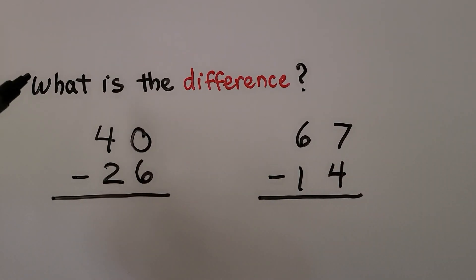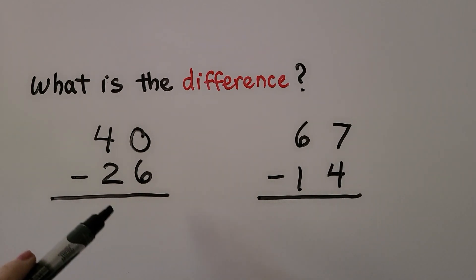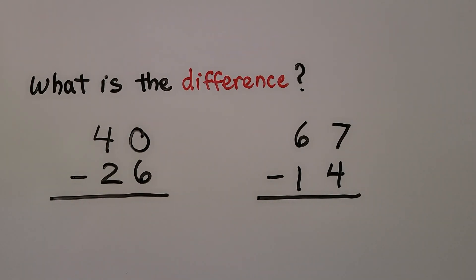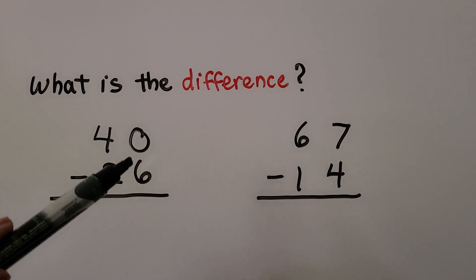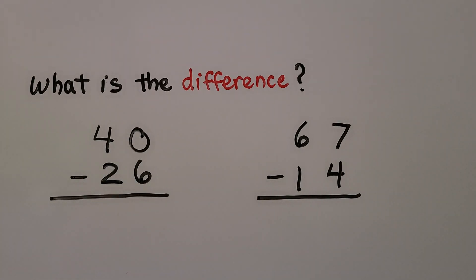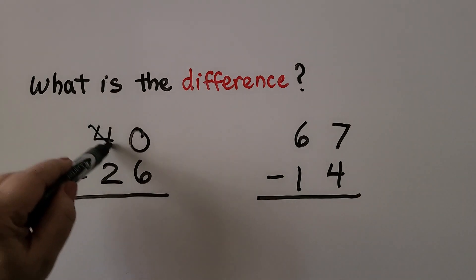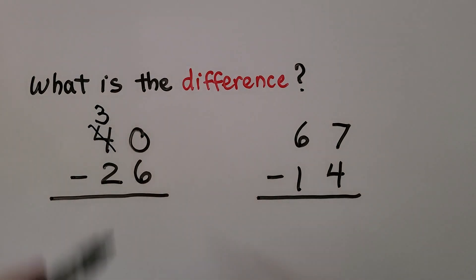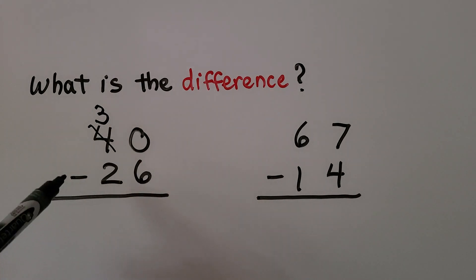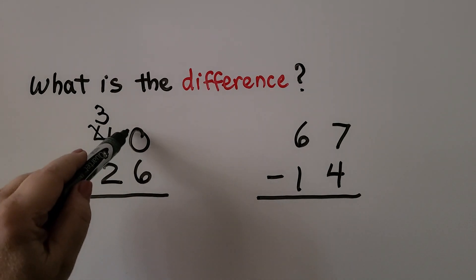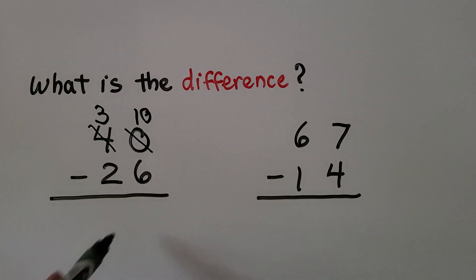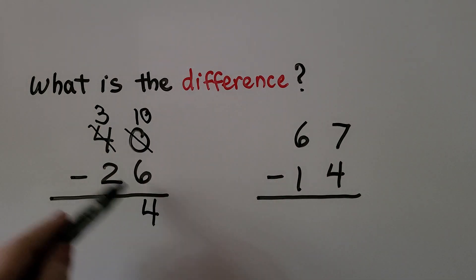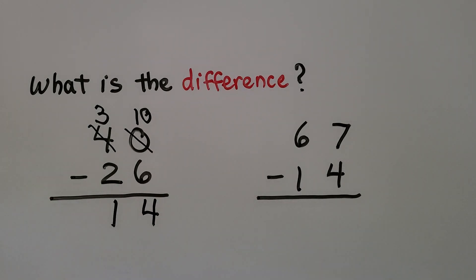We're finding the difference, which means we need to find the answer to a subtraction problem. We look at the ones place: we have 0 ones and we need to take away 6 ones, and we can't — there aren't enough ones. So we cross off the 4 and take a 10 away, now we have 3 tens. We give it to the ones place — now instead of 0 ones, we have 10 ones. 10 minus 6 is 4. 3 tens minus 2 tens is 1 ten. The difference is 14.